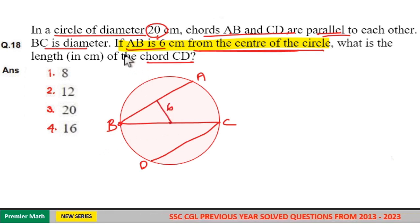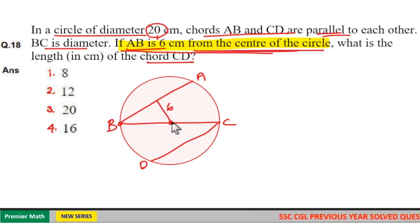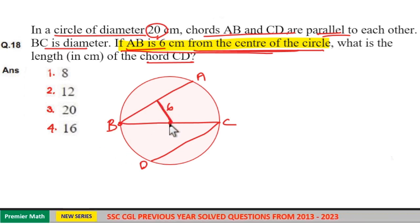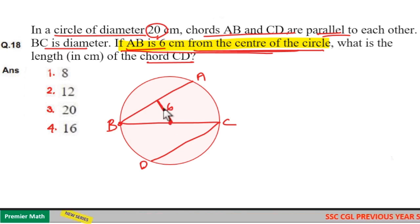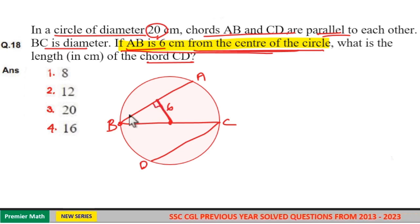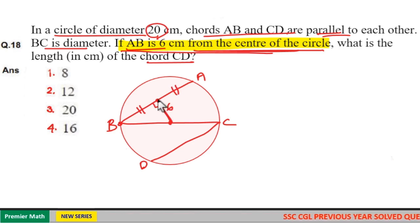The shortest possible distance from the center of the circle to chord AB is 6 centimeters. When you draw the shortest distance line from the center of the circle to a chord, it meets the chord perpendicularly and at the midpoint of the chord — which means these two halves are equal.